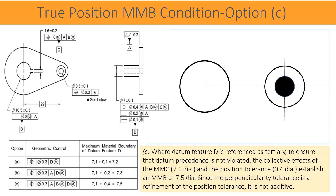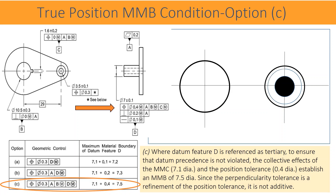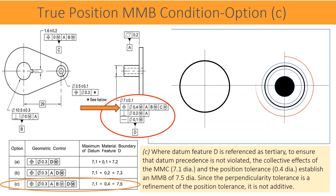Where datum feature D is referenced as tertiary, to ensure that datum precedence is not violated, the collective effects of MMC 7.1 diameter and the position tolerance 0.4 diameter establish an MMB of 7.5 diameter. Since the perpendicularity tolerance is a refinement of the position tolerance, it is not additive.